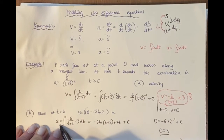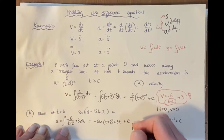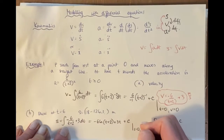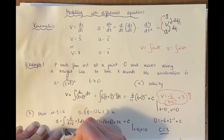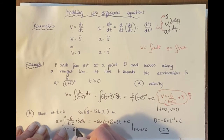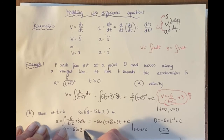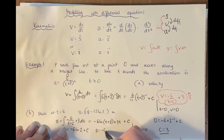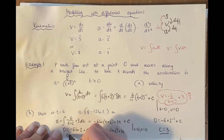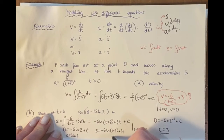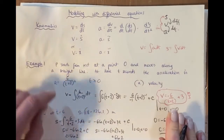Again, initially the particle is at rest at the origin, so displacement = 0 and t = 0. Substituting: 0 = −6 ln 2 + 0 + c, so c = 6 ln 2. Therefore s = −6 ln(t+2) + 3t + 6 ln 2.